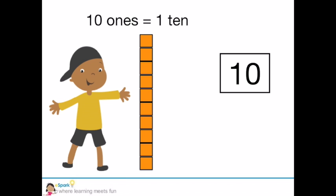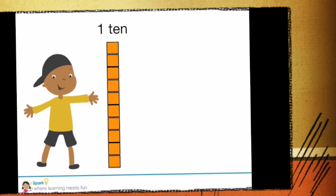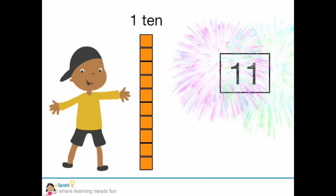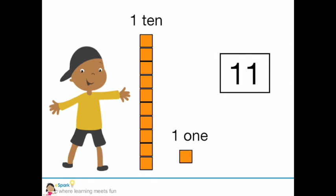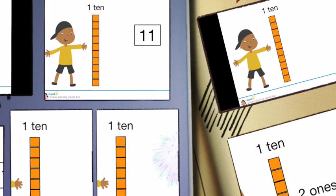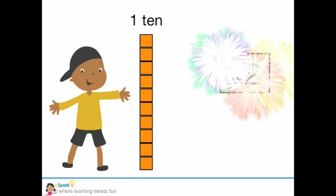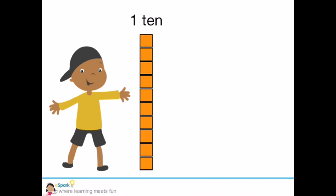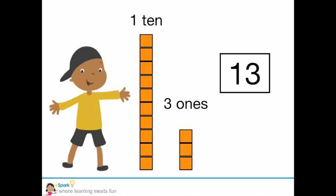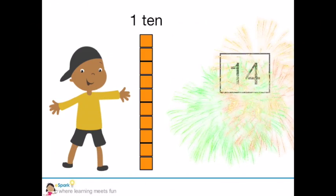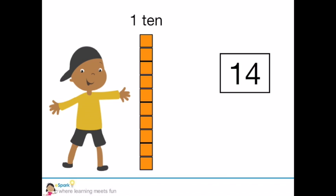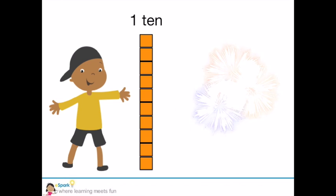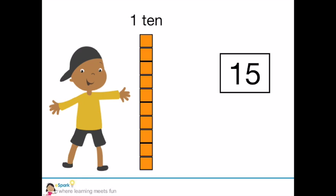We are going to leave this group of 10 stacked so it's easier for us to count up. Here, I have my group of 10, but I have also added one more. 11 is a group of 10 and 1 extra 1. 12 is one group of 10 and 2 extra ones. 13 is one group of 10 and 3 extra ones. 14 is one group of 10 and 4 extra ones. 15 is one group of 10 and 5 extra ones.